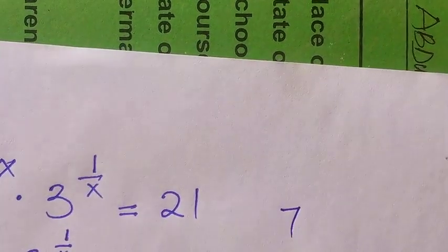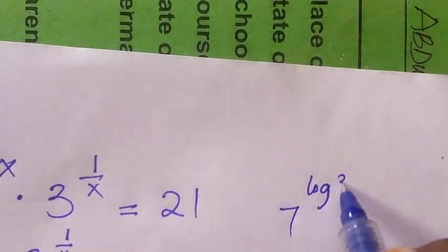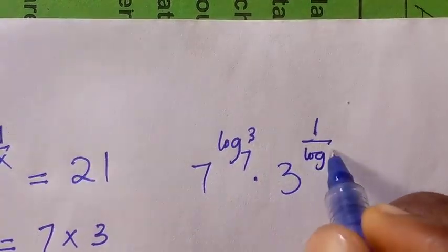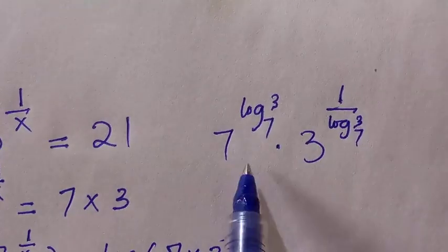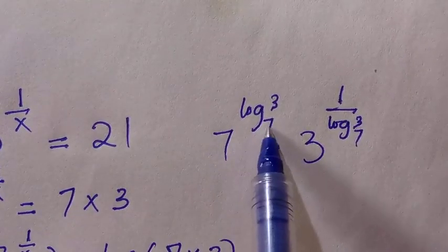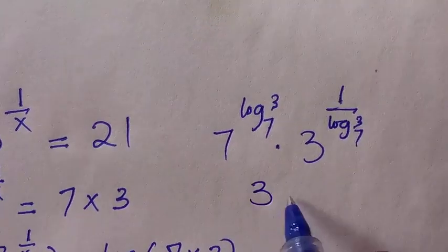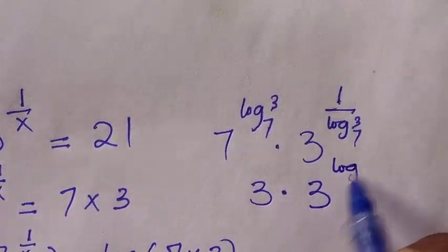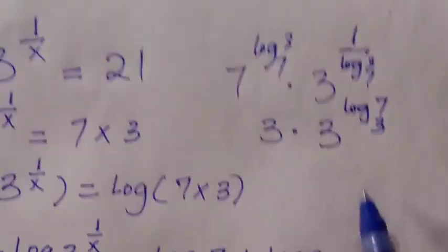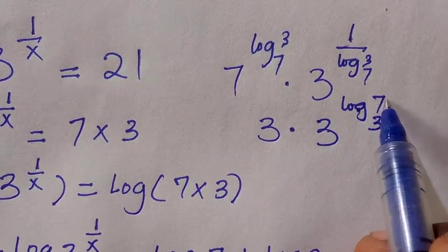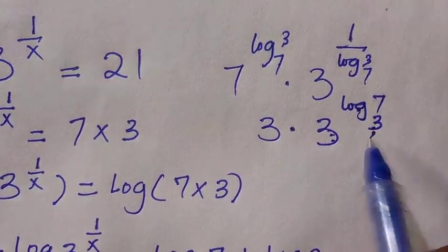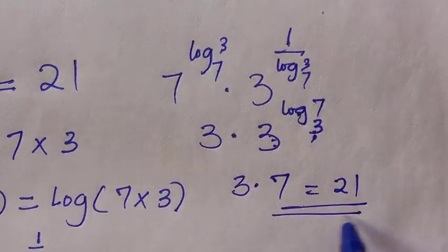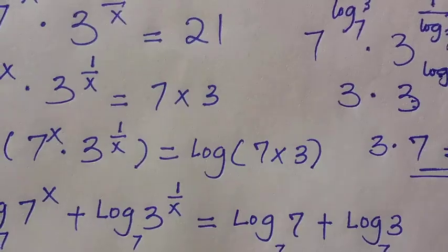Let's verify x equals log 3 base 7. We substitute into 7 to the power of log 3 base 7, multiplied by 3 to the power of 1 divided by log 3 base 7. By the identity a to the power log_a(b) equals b, the first term simplifies to 3. For the second term, 1 over log 3 base 7 equals log 7 base 3, so 3 to the power log 7 base 3 equals 7. Therefore 3 times 7 equals 21, confirming the left hand side equals the right hand side.